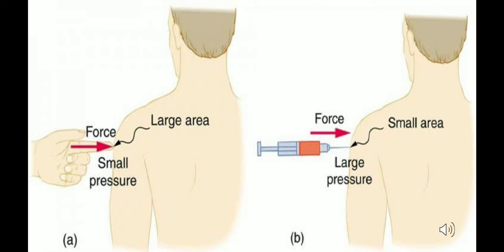One more example: pressing a finger against someone's body versus injecting with a needle. A finger has a larger area, so the pressure is less and it cannot penetrate the skin. A needle has a very small area, creating very high pressure, so it easily penetrates — that is why injections can be inserted into the body.